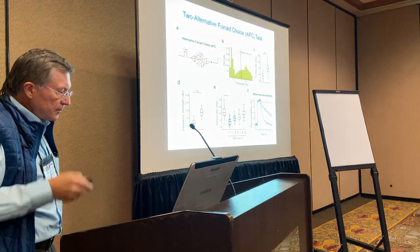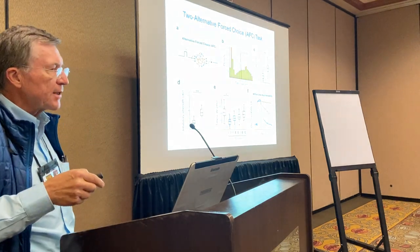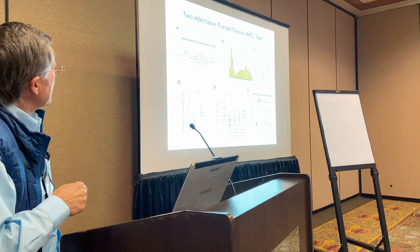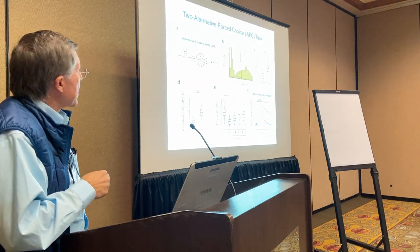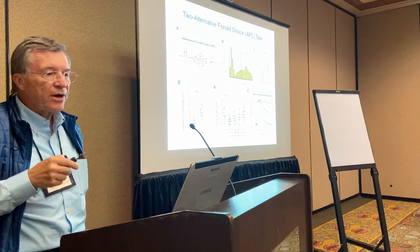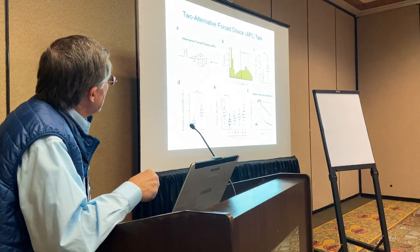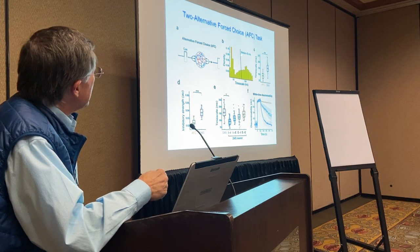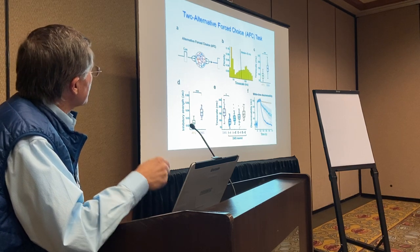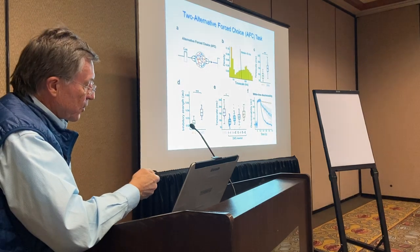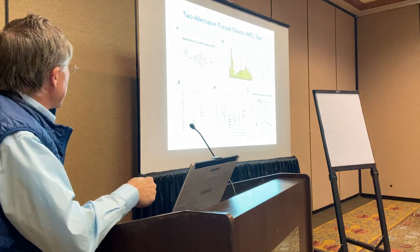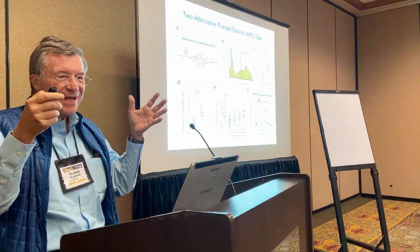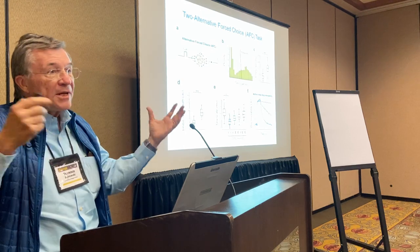Working memory requires remembering something over time. Let's look at a simpler task: alternating forced choice. Here you don't need any memory — as soon as the cue comes, you press the button, positive or negative. If you train up a network with alternating forced choice, you get a distribution of timescales with a much bigger peak at smaller timescales. The median is 43 milliseconds, which is much lower than for the working memory task. We can also look at the strengths of the inhibition — and this gets to the core of the issue.